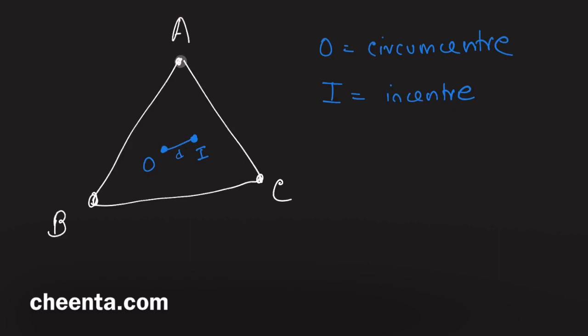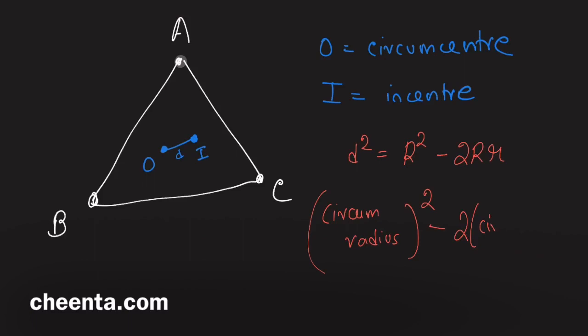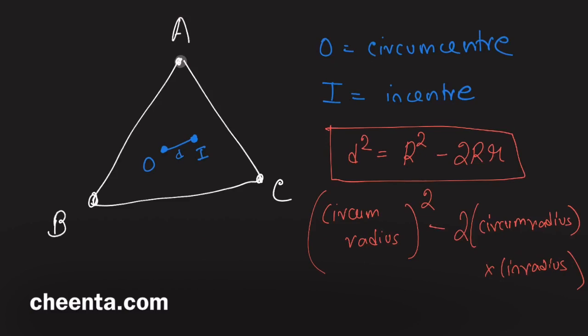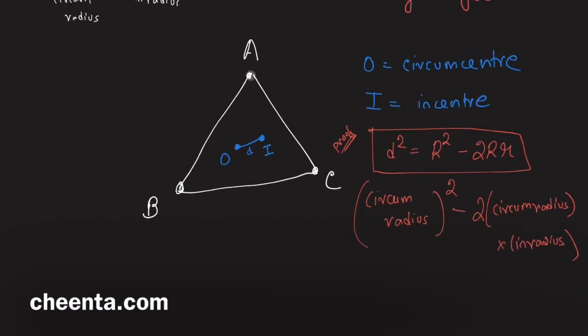Let's call this distance D. Euler's formula tells us that the square of this distance has a very nice property: D² = R² − 2Rr, where R is the circumradius and r is the inradius. We'll cover the proof in a subsequent video; it's also on the website and in many classical geometry books.